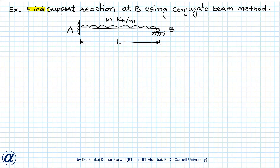In this question, we need to find the support reaction at B using the conjugate beam method. We are given a propped cantilever beam where support A is fixed and support B is a roller support. The beam is subjected to a uniformly distributed load of W kN per meter. The total number of unknown reactions at A is 3 — two forces and one moment — and at B is 1, the vertical reaction.